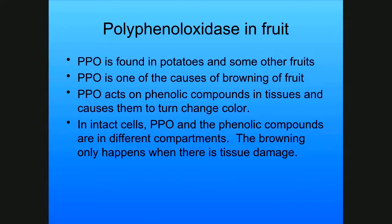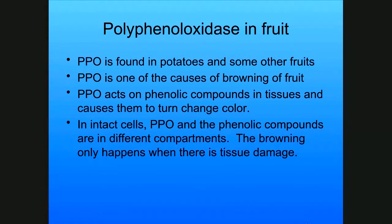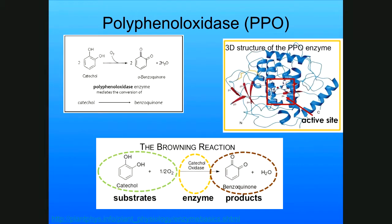The enzyme we'll be working with is polyphenol oxidase (PPO). It's an enzyme found in potatoes and some other fruits, and it's one of the causes of the browning of fruit. This enzyme acts on a phenolic compound in tissues and causes them to change color. If the cells are intact, the PPO and the phenolic compounds are in different compartments and don't meet. But if there's tissue damage, they can encounter each other and things turn brown. The reaction converts catechol — the phenolic substrate — into benzoquinone, using polyphenol oxidase, and the reaction requires oxygen.